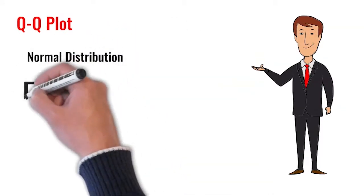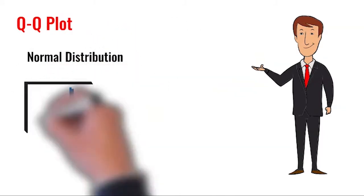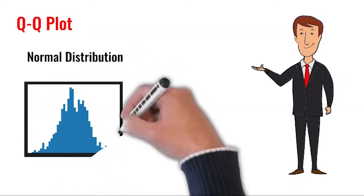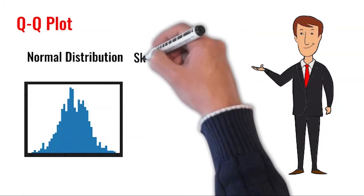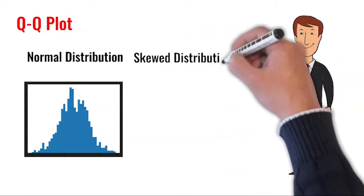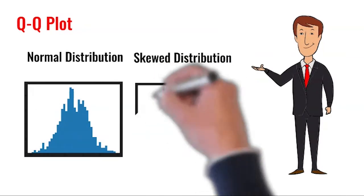For continuous data, normal distribution brings a whole lot of advantages compared to its counterparts. Various inferential statistical processes assume that the distribution is normal. A bell-shaped curve is easy to describe with mean and standard deviation.